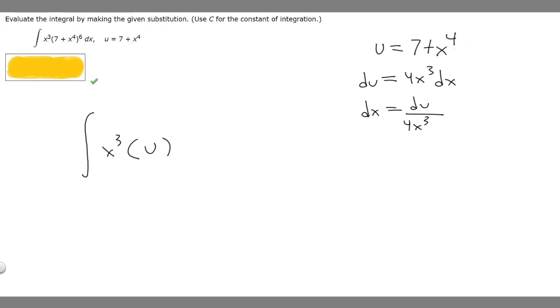And then it's raised to the 6th. Then we want to replace dx with what we solved for dx to be, which is du over 4x cubed.